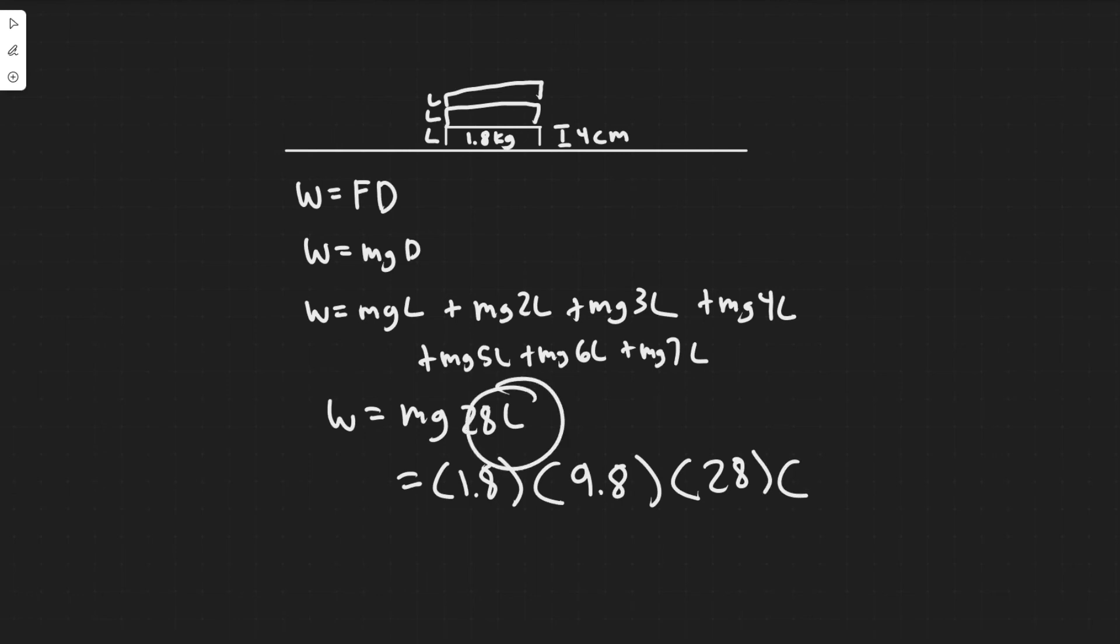And then multiply by the length. So the length in this problem is, we said it's four centimeters, the length of the book. So 0.04 meters. So you're going to have 1.8 times 9.8 times 28 times 0.04. So you're going to get it equals 19.7568.